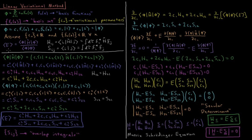To remind ourselves from the previous videos on the variational method, the energy of our approximate wave function is equal to the integral over all space of phi-star times H acting on phi, divided by the normalization integral, the integral over all space of phi-star times phi. We define two additional terms: H_ij, which is the integral over all space of f_i-star times H times f_j, and the overlap integral S_ij, which is the integral over all space of f_i-star times f_j. We don't have to worry about complex conjugates here because we're assuming all functions and coefficients are real.